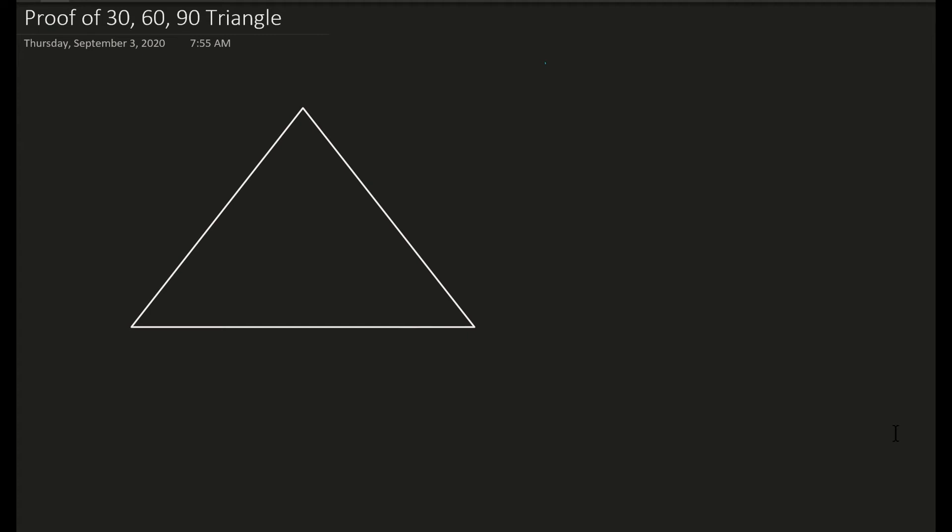In this video, we're going to be going over the proof of a 30, 60, 90 degree triangle and where those rules come from.